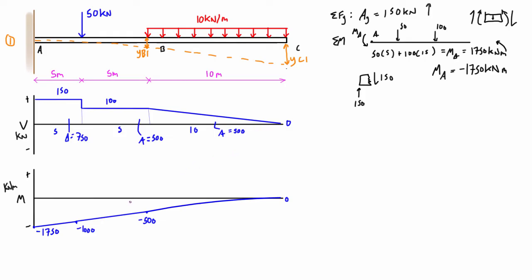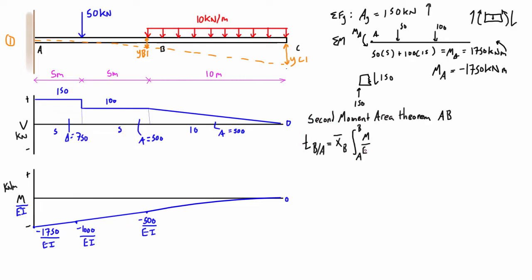For the moment area method, we convert to an M/EI diagram by dividing everything by EI. We'll apply the second moment area theorem from A to B to get YB1, and from A to C to get YC1. Because the tangent at A is horizontal (fixed connection), the tangential deviation at B equals the actual deflection YB1. This is just the sum of all the x-bars times the areas for each composite section.